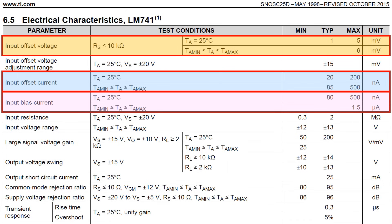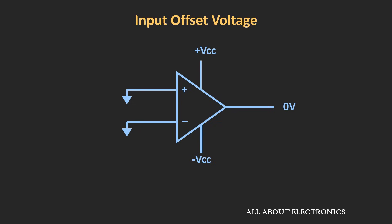In this video, we will understand the input offset voltage — what it is and how it can affect the output of the op-amp. To understand this, let us assume that both input terminals of the op-amp are at zero potential. If the op-amp is ideal, the output should be equal to zero volts. But actually, you will find some finite voltage at the output terminal. Let us understand why this finite voltage appears.